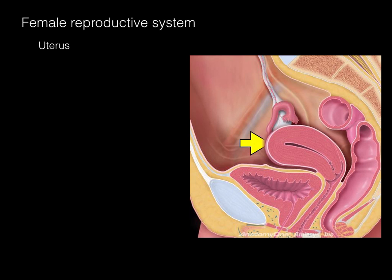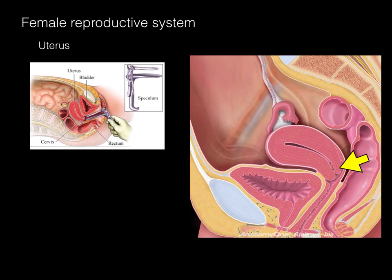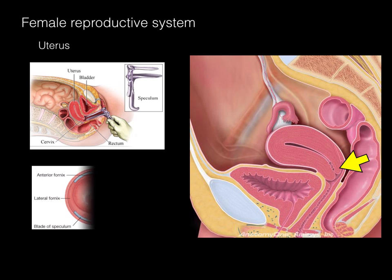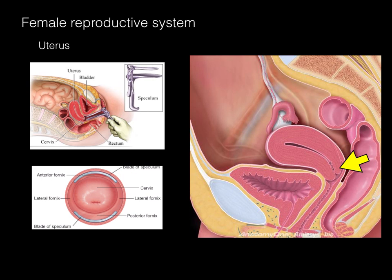The uterus, also known as the womb, is the organ where the fetus gestates. There's the fundus, or the dome top part of the uterus, then the uterine body, and then the neck or cervix of the uterus. If we were to take a speculum and place it inside the vagina, you would see the blade above and below, and there's the cervix. That little opening that looks like a mouth is the external os of the cervix, where menses or a baby will come out, or sperm will go in.